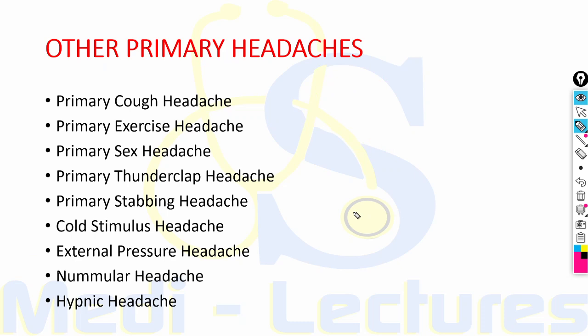Primary sex headache is usually of three types: dull bilateral headache, sudden severe explosive headache during orgasm — which can be seen with subarachnoid hemorrhage precipitated by sexual intercourse — or postural headache after coitus, which is a low CSF pressure headache and not considered a primary headache.